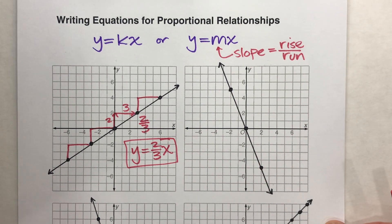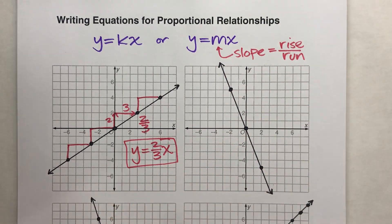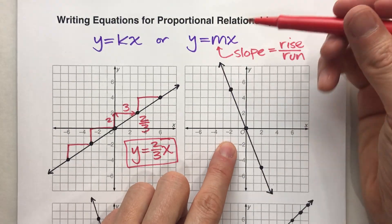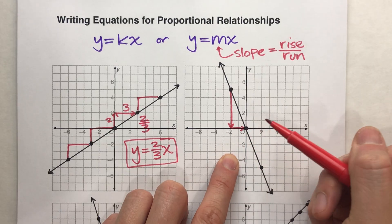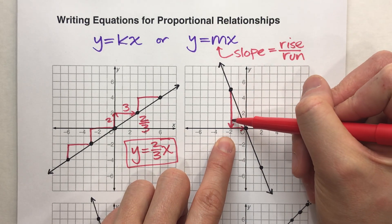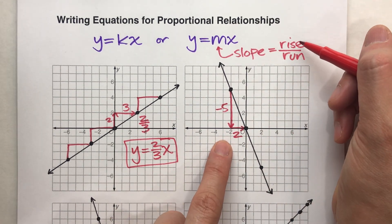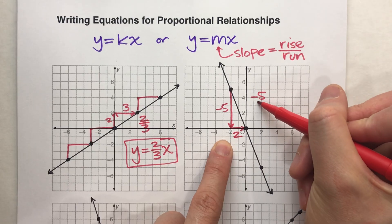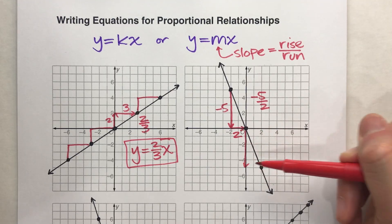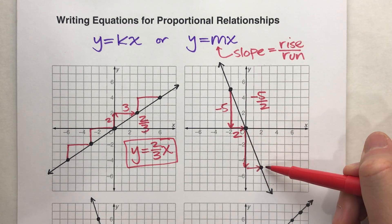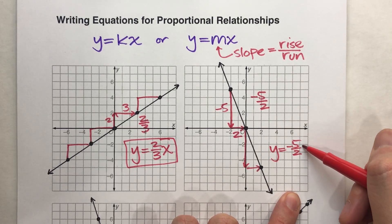Let's see another one. Notice this graph — again, it's a straight line and it goes through the origin, (0, 0). We need to figure out what that slope is. As we move from left to right, this time it's going down and to the right — down five and to the right two. So my slope, my rise over run, is negative five over two. It doesn't matter which two points I pick. My equation is y equals negative five over two times x.